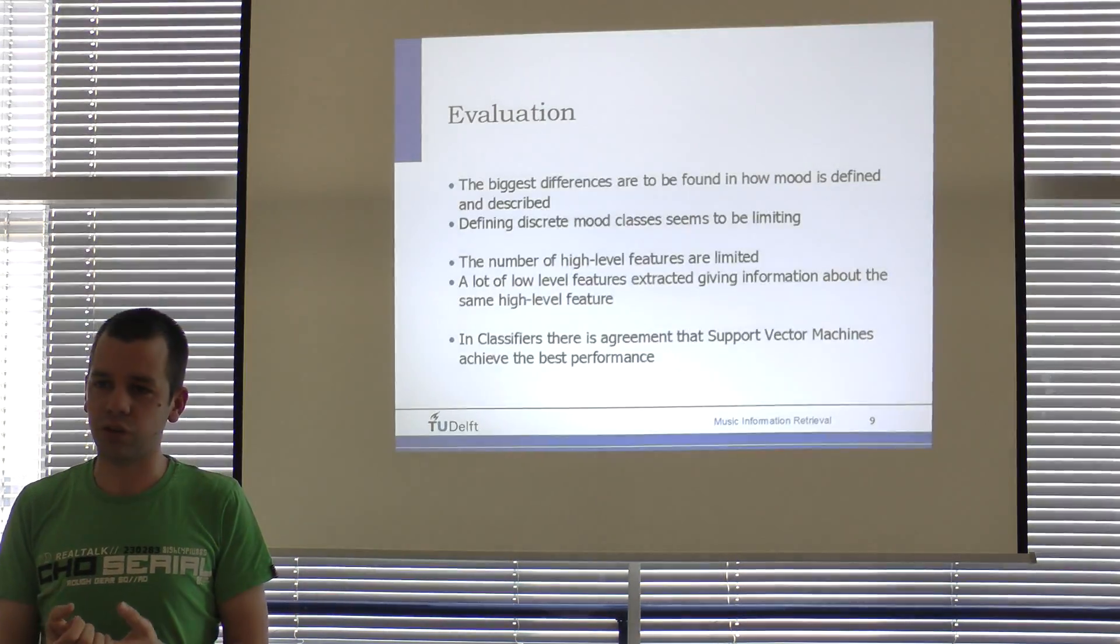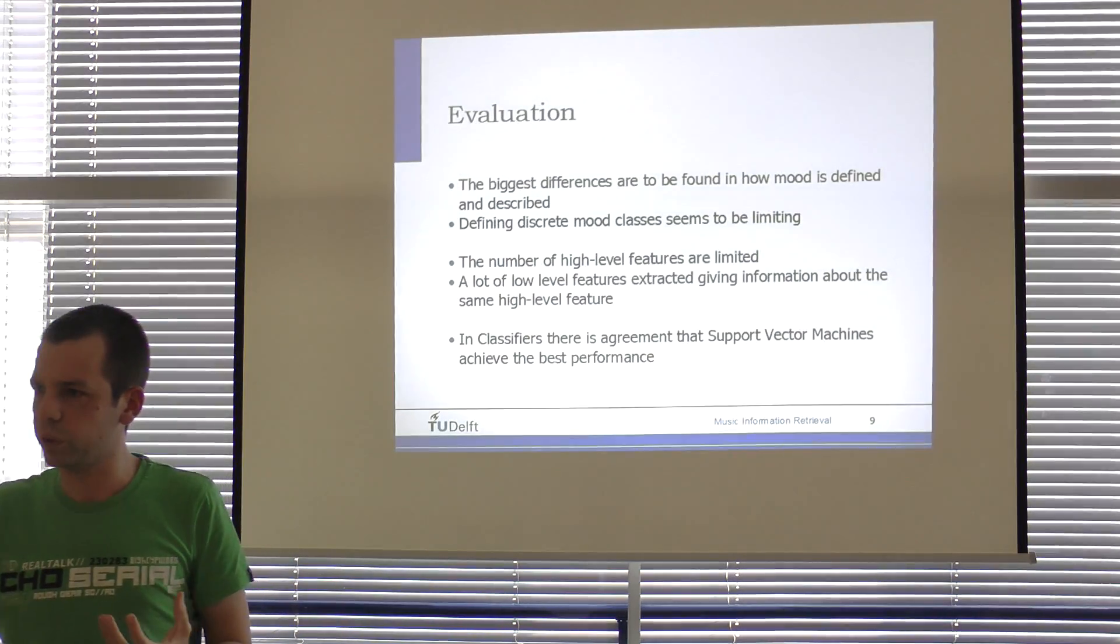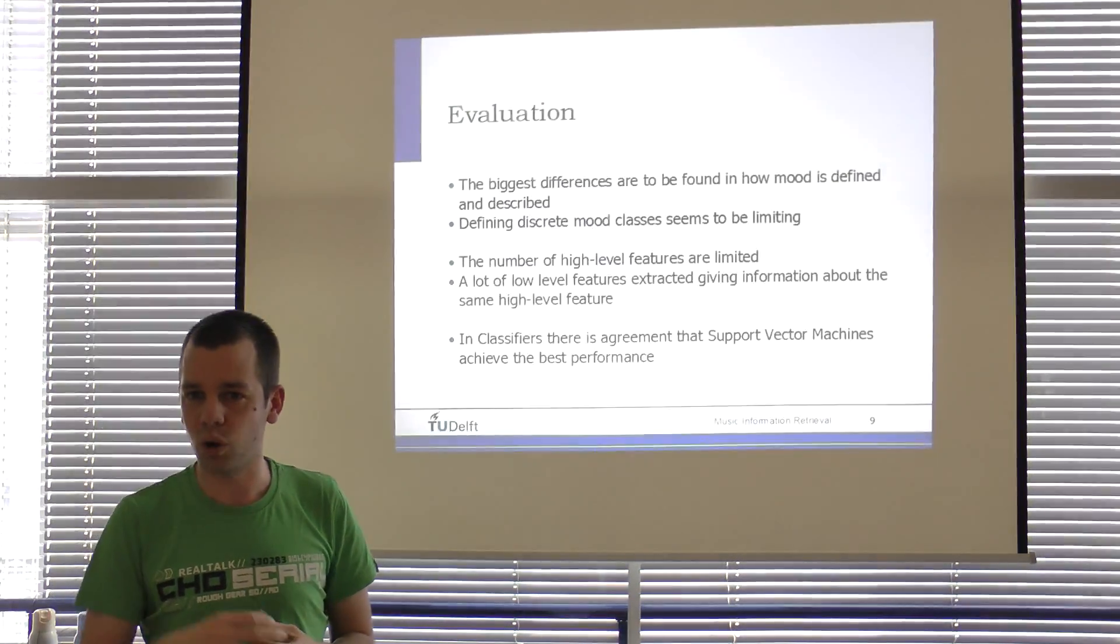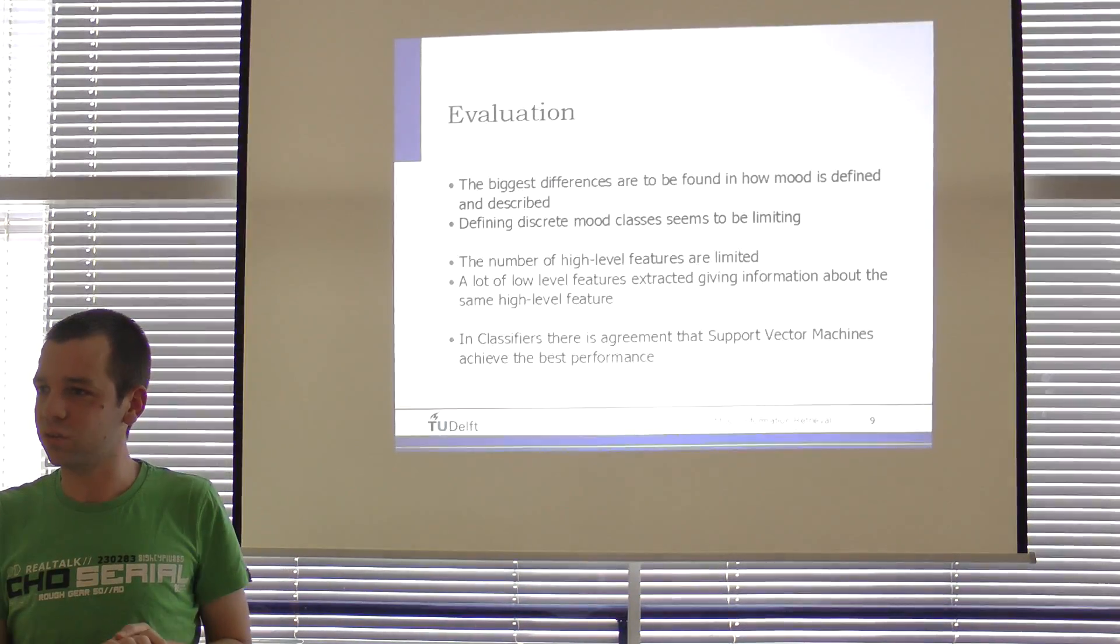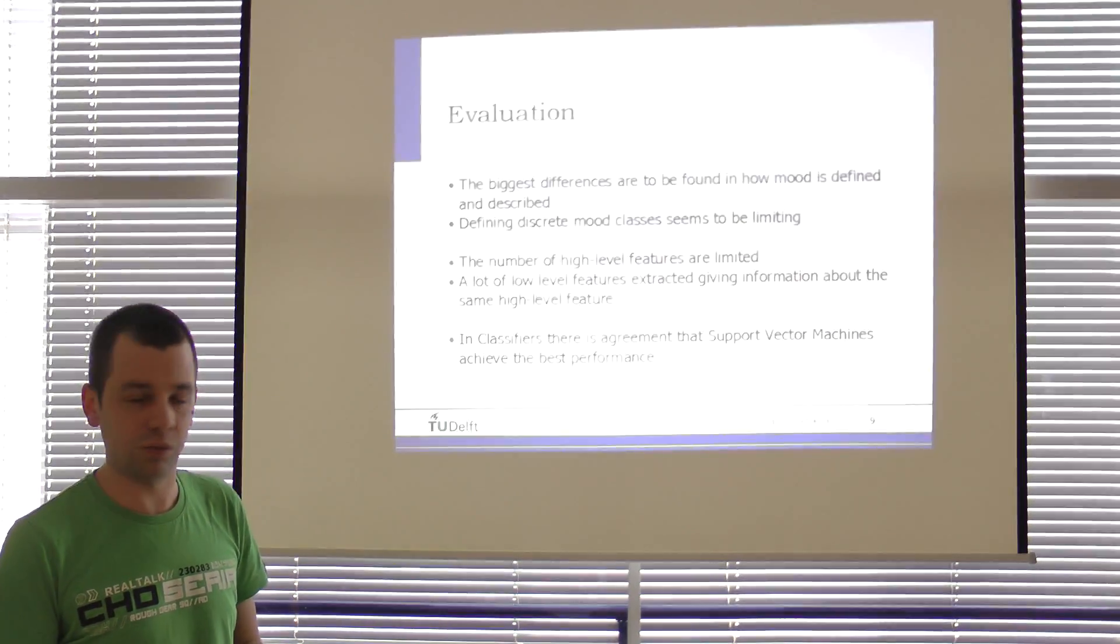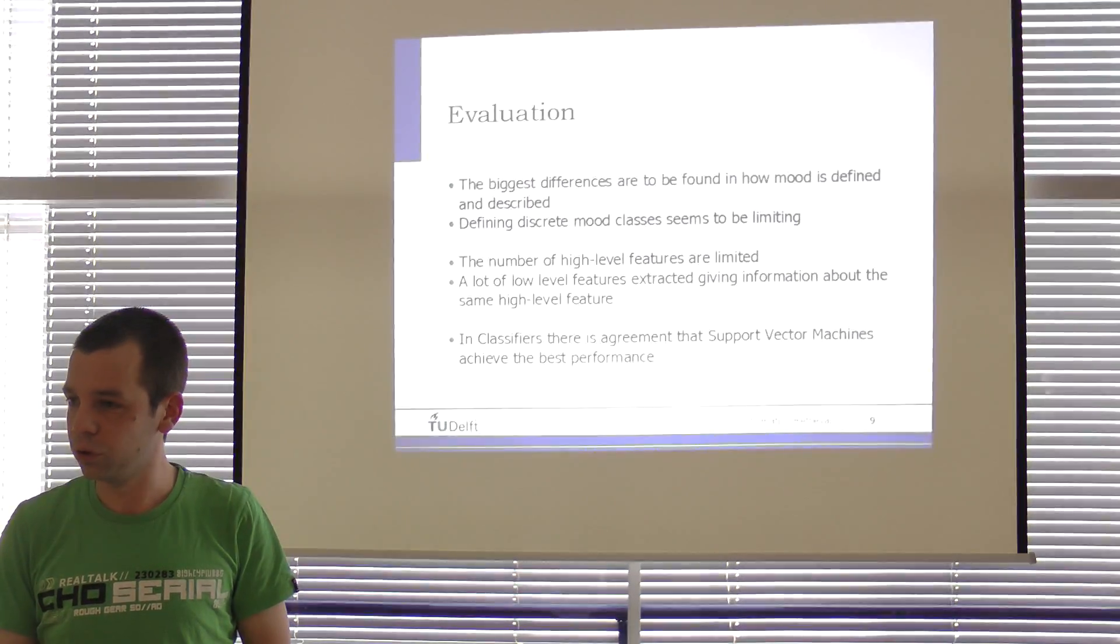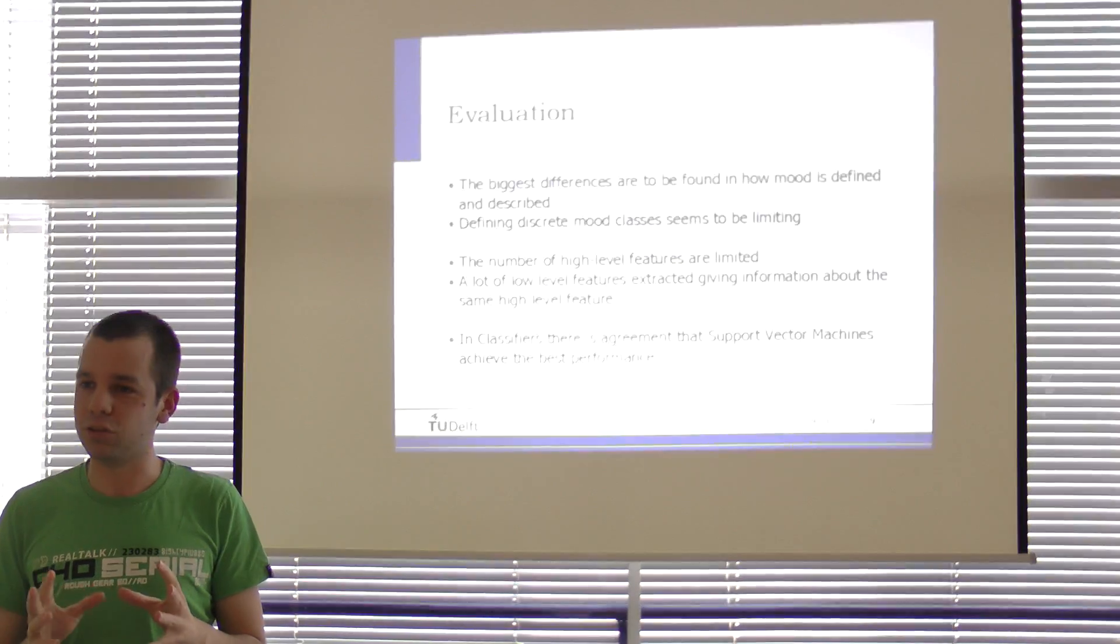The number of features we're extracting seems to be limited. We've reached some limits—we have these three features, but we can't make that step further. Why is that limit? Why can musicians say more about music than we can extract from signal processing of the data?